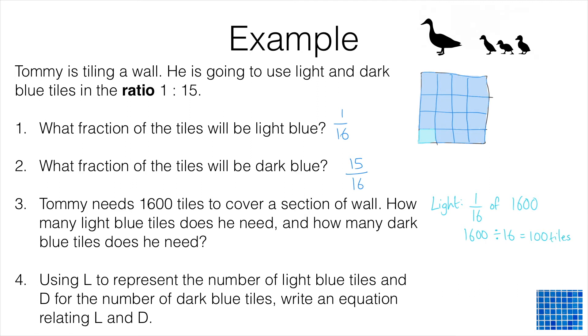We can use the same kind of logic to work out how many dark blue tiles he needs. We know that 15 sixteenths of the tiles need to be dark blue, so we can work out 15 sixteenths of 1600. Pause the video and have a go at that one for yourself. Hopefully you've worked out that 15 sixteenths of 1600 is 1500.